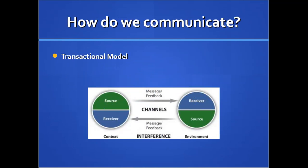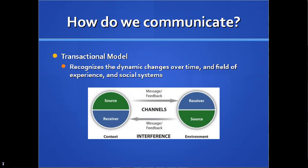How do we communicate? The transactional model. We still have the idea of field of experience, and it also brings out the idea that a source and a receiver can be the same thing — you can be a source and receiver at the same time. It doesn't have to be an interchanging idea. You're not one at one point and one at the other — you're both at the same time.